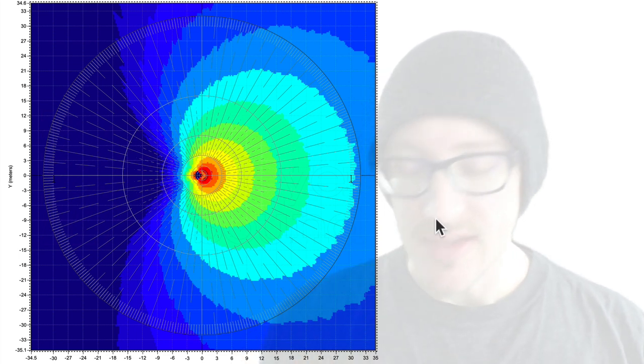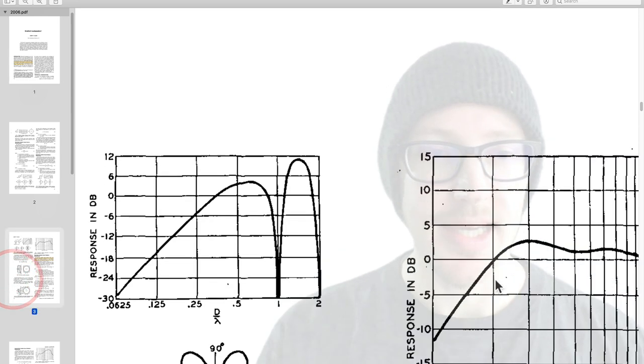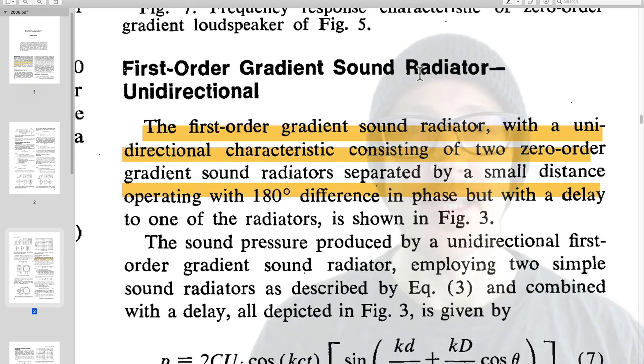So let's look at each of these a little bit closer. So first of all, this guy Harry Olson wrote this paper, Gradient Loudspeakers, in which he says if you want to make a first order gradient sound radiator unidirectional then you need two zero order gradient sound radiators separated by a small distance operating with 180 degrees difference in phase but with a delay to one of the radiators.